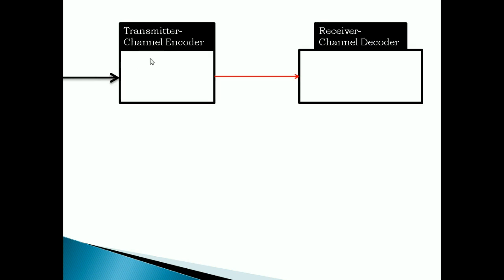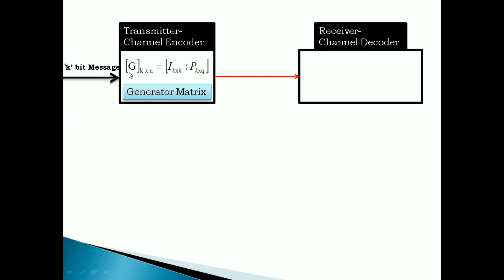In order to understand the principle of linear block code, a simple transmitter and receiver is considered. In the transmitter, a channel encoder is available, and in the receiver, a channel decoder is available. To the transmitter, k number of message bits are applied. In the channel encoder, a generator matrix plays a major role in detecting and correcting errors in linear block code.